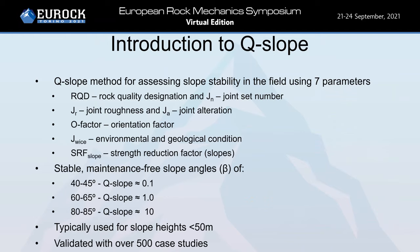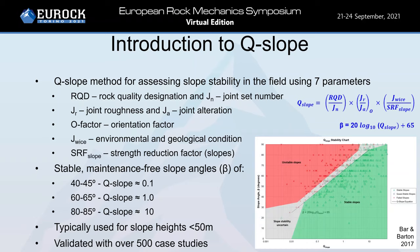The Q-slope method for assessing slope stability in the field uses seven parameters: RQD and JN or joint set number, joint roughness and joint alteration, an orientation factor, J-wise which is an environmental and geological condition factor, and a strength reduction factor specifically made for slopes. The Q-slope classification system was developed to provide a correlation between Q-slope ratings and long-term stable slope angles. Stable maintenance-free slope angles of 40 to 45 degrees are attained with a Q-slope value of approximately 0.1, and 80 to 85 degrees with a Q-slope value of 10.